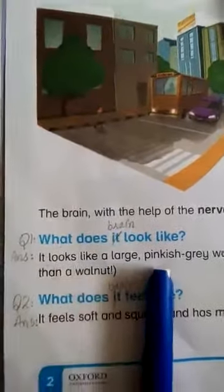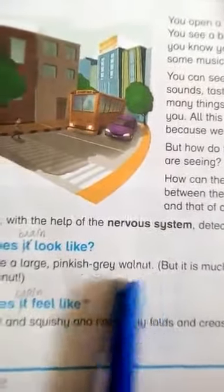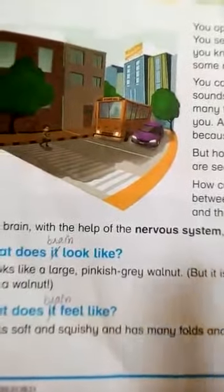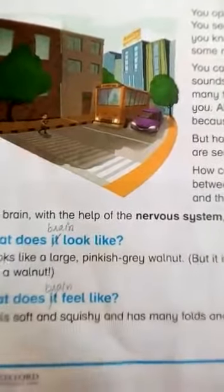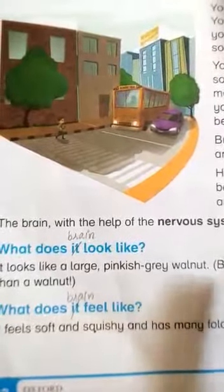What does the brain look like? It looks like a large pinkish-grey walnut. You can see the internal structure of the brain — the brain looks similar in that way, but it is much bigger than a walnut.